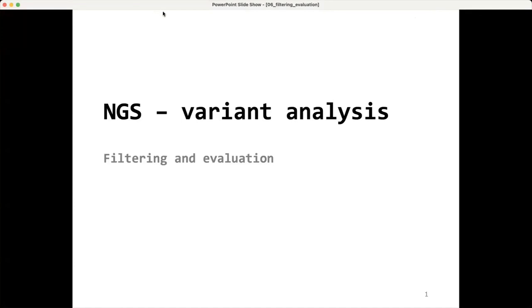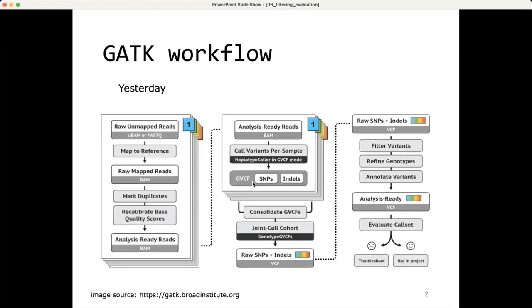So now that we have created our VCFs, we have created a genomics DB and out of that genomics DB we have extracted the VCF containing all of the variants in our trio, basically all variants in our cohort. Now it's time to separate the real variants, the real existing variants from the false positives. And that is not a very trivial task.